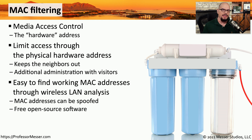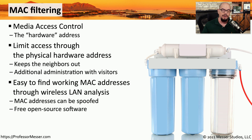One of the problems with an access control list based on MAC address is that it's very easy to find an existing MAC address that's communicating on the network. You can use a simple wireless LAN analyzer to view all of the MAC addresses communicating. Simply wait for one of those devices to leave, and then you can configure your device with the same MAC address, circumventing the MAC address filters because you're now using a trusted MAC address.